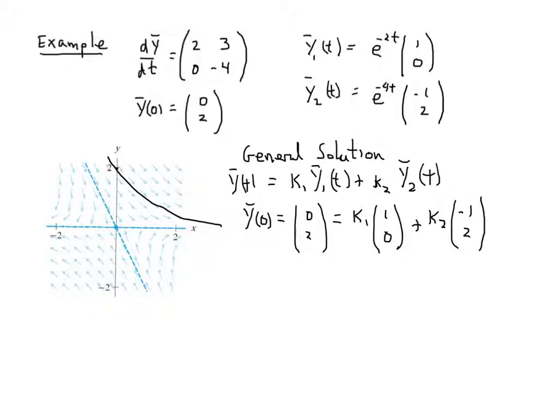Well, this leads to an equation, two equations and two unknowns, easy for us to solve. I'm going to write them as follows: k₁ - k₂ has to be 0, and 0k₁ + 2k₂ has to be 2. Well, this implies that k₁ equals k₂, and this implies that k₂ is equal to 1. So, sure enough, our solution of the initial value problem...